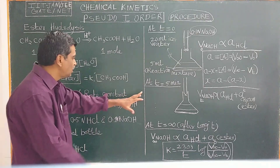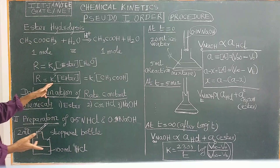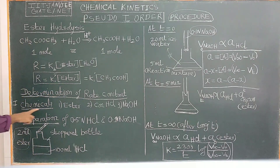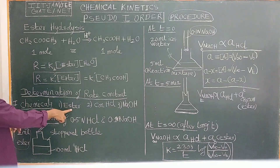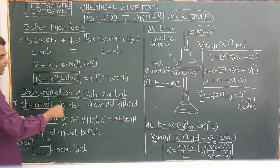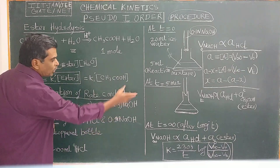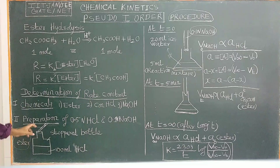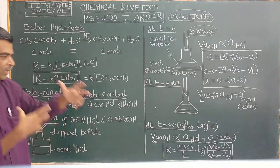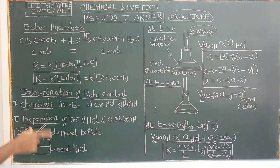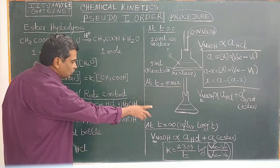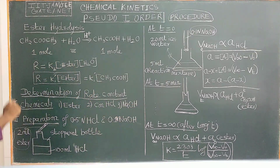Now, determination of the rate constant — how is the pseudo-first-order rate constant determined? The chemicals required are: ester (methyl acetate or ethyl acetate), concentrated HCl, sodium hydroxide, and phenolphthalein as indicator. For solution preparation, we need 0.5 normal HCl, 0.1 normal sodium hydroxide, and phenolphthalein indicator.